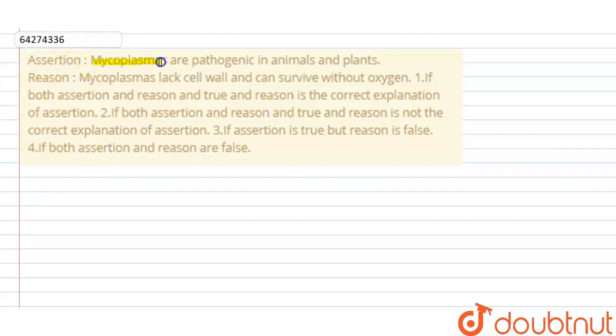Assertion: Mycoplasma are pathogenic in animals and plants. Reason: Mycoplasma lacks cell wall and can survive without oxygen.